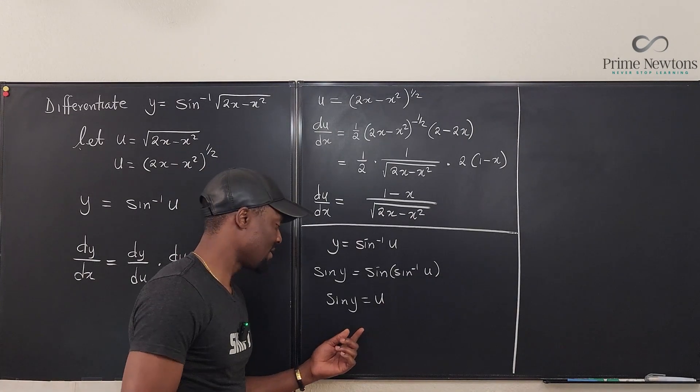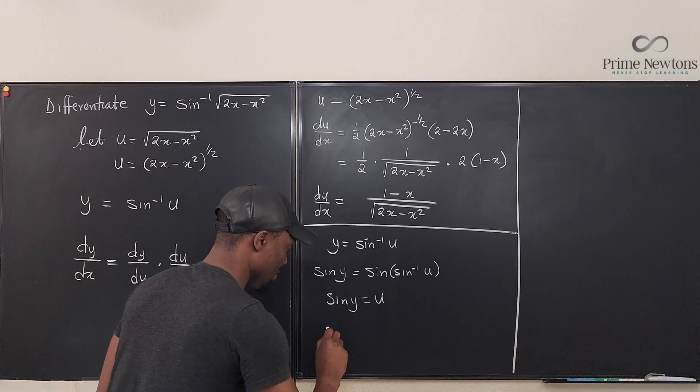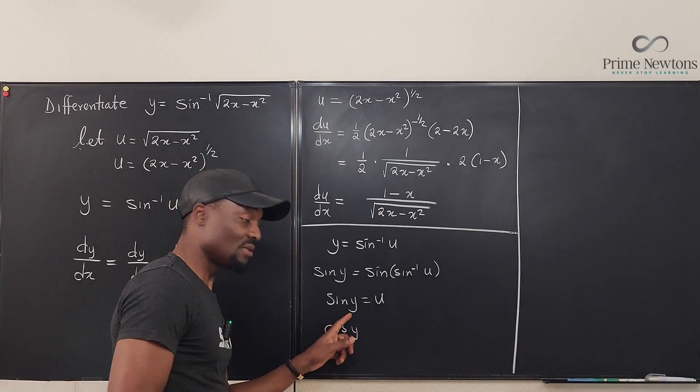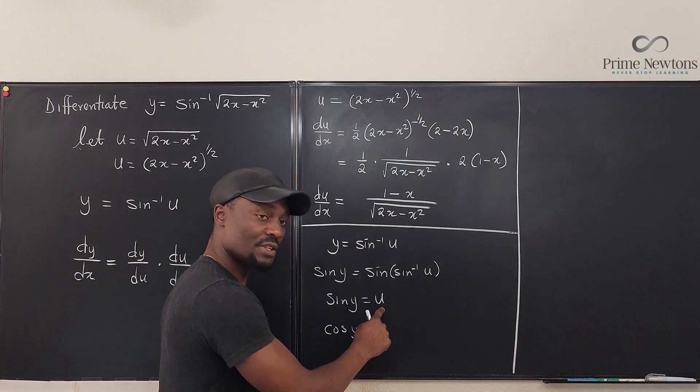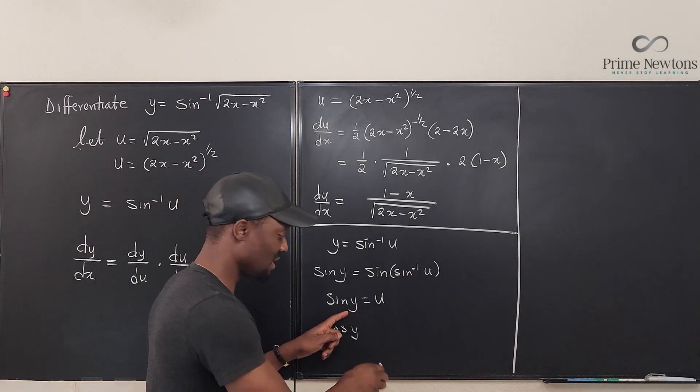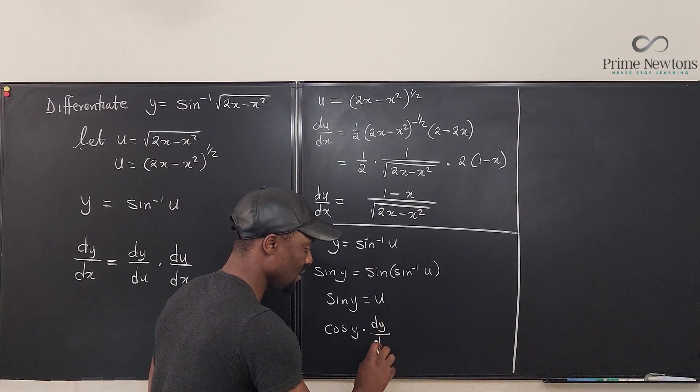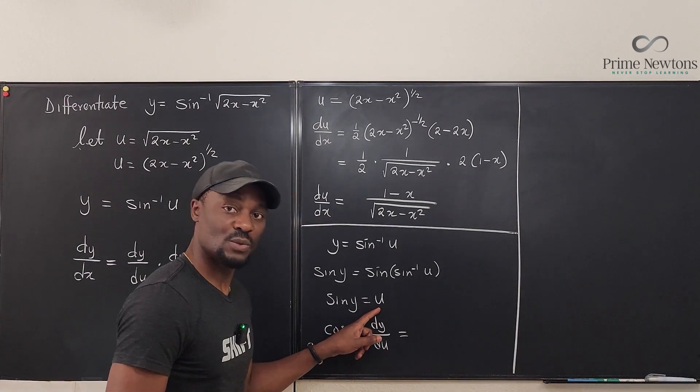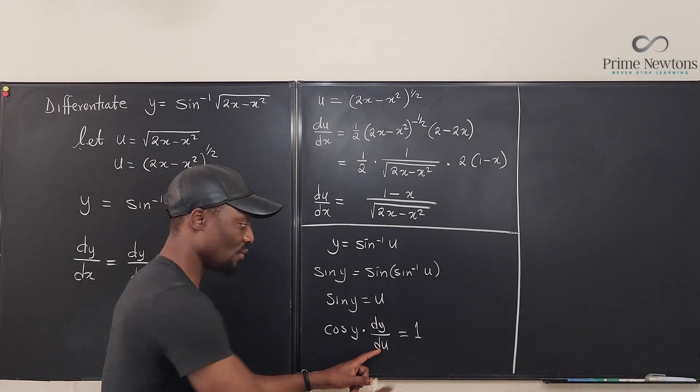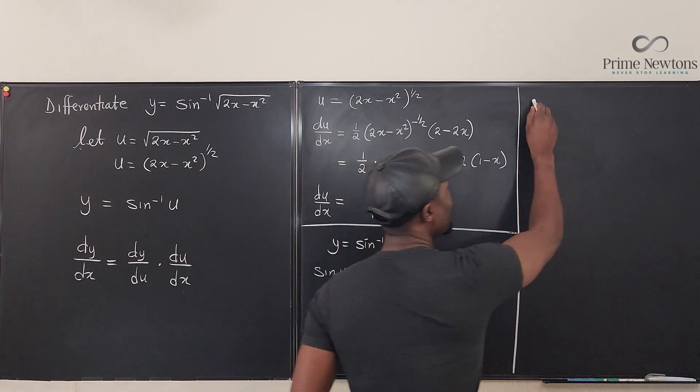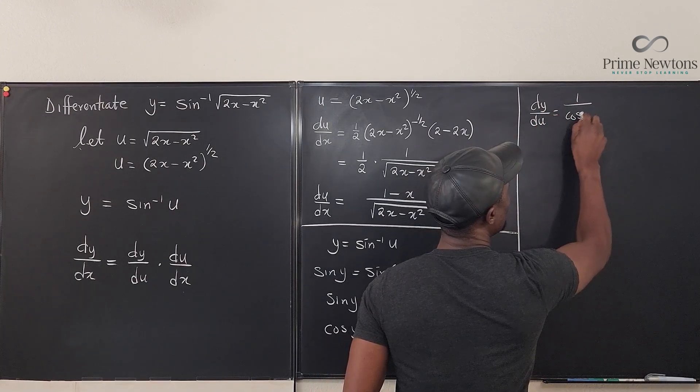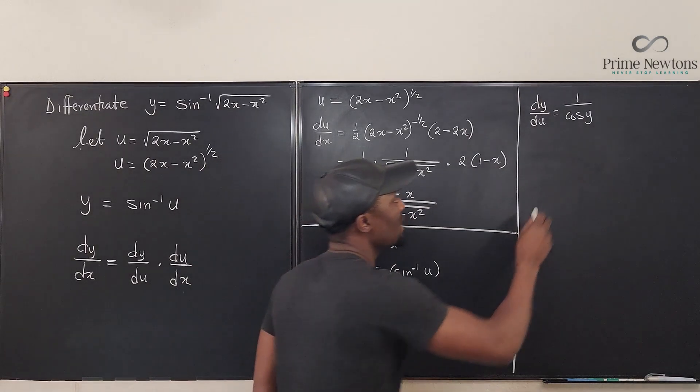So now let's differentiate this. If I differentiate sine y, I'm going to get cosine y. Right? Times, because y is a function of u and I'm differentiating with respect to u, this is going to be sine y times dy/du. If I differentiate this with respect to u, what do I get? I get 1. So clearly dy/du is 1 over cosine y, right? So I know that dy/du is 1 over cosine y, or what we call secant y. Let's just write secant y.